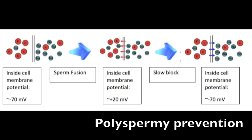Once an egg has been fertilized, it is important for the egg to prevent more sperm from entering. Polyspermy is when two or more sperm are able to penetrate the egg and activate it metabolically. For most species, this is a problem, so there are two major ways that the egg seeks to prevent this from happening.